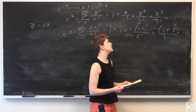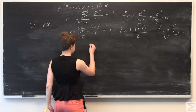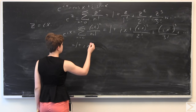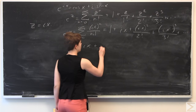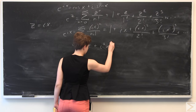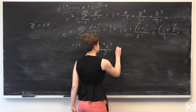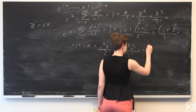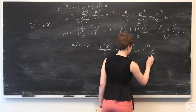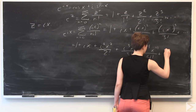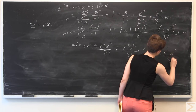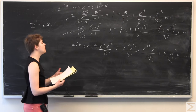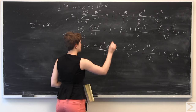Now we distribute the exponents inside. Writing out more terms, the first two stay the same: 1 plus ix, then i squared x squared over 2 factorial, plus i cubed x cubed over 3 factorial, plus i to the fourth x to the fourth over 4 factorial, plus i to the fifth x to the fifth over 5 factorial, and so on. We know that since i is equal to the square root of negative 1, i squared equals negative 1.